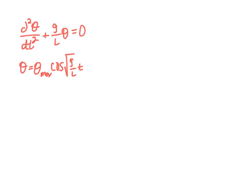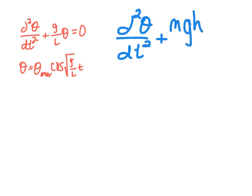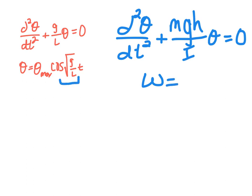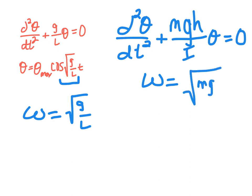For the physical pendulum, using what we derived earlier, the differential equation becomes: d²θ/dt² + (mgh/I)θ = 0, where I used h instead of l/2 to keep it more generic. So the angular frequency for the physical pendulum is √(mgh/I), compared to √(g/l) for the simple pendulum.